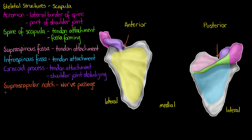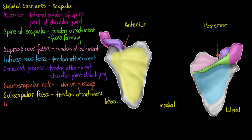The last large fossa on the scapula is the sub-scapular fossa. It's on the anterior surface of the bone, closest to the front of the body — just behind our ribcage. The sub-scapular fossa is a tendon attachment point for the sub-scapular muscle.